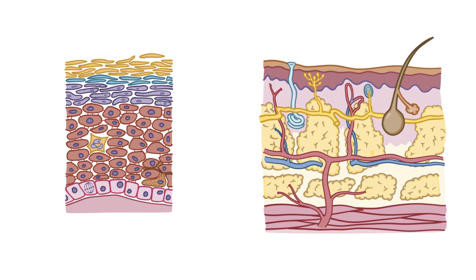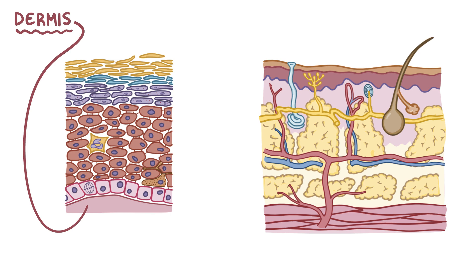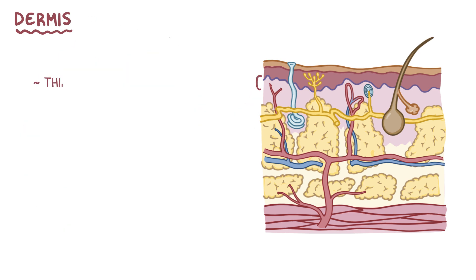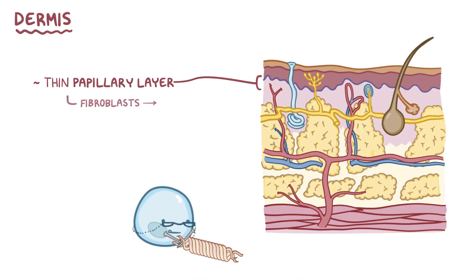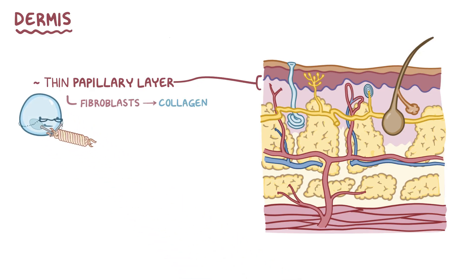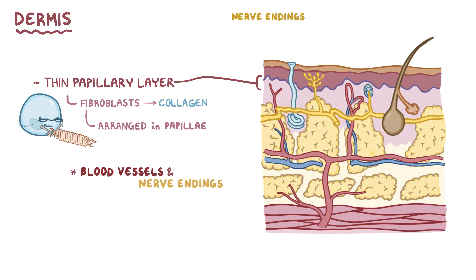Underneath the epidermis is the thicker dermis layer that contains the nerves and blood vessels. The dermis is divided into two layers: a thin papillary layer just below the epidermis, and a deeper reticular layer. The papillary layer contains fibroblasts, which produce a connective tissue protein called collagen. The fibroblasts are arranged in finger-like projections called papillae, each of which contains blood vessels and nerve endings. Nerve endings found in this layer sense pain and fine touch, which allows you to feel something like a feather touching your arm.